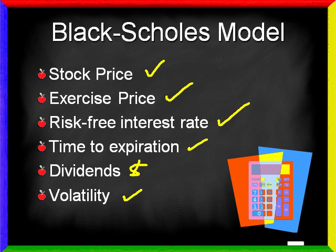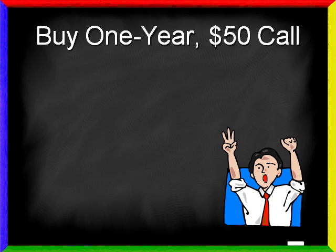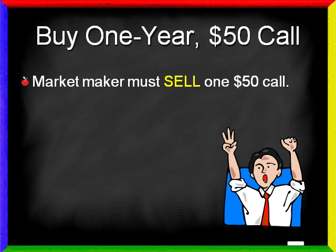Once you enter these six factors, it will tell you what the price of a call and a put option should be. How is that possible? Let's find the answer by looking at the way a market maker fills an option order. Assume you wish to buy a one-year $50 call option. What's it worth? Let's break it down.